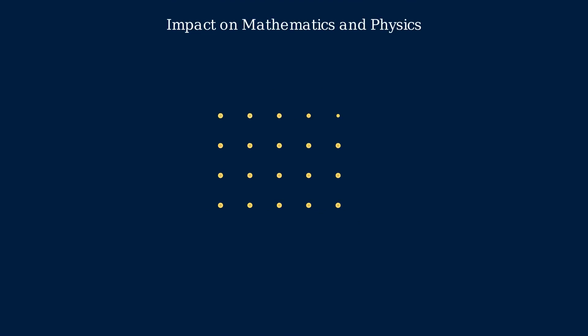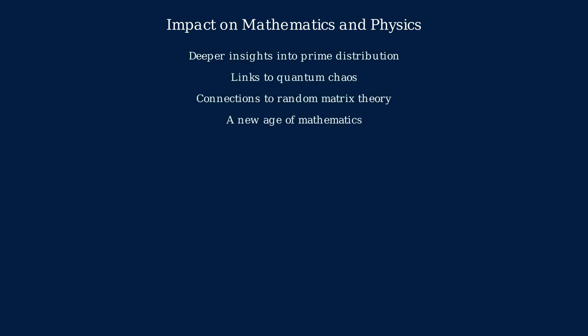If the Riemann hypothesis is proven, it would have profound implications for number theory, providing deeper insights into the distribution of prime numbers. It also impacts other areas of mathematics and physics, particularly quantum chaos and random matrix theory. The influence is so wide that it could usher in a new age of mathematics. Proving RH would connect primes, chaos, and randomness in unprecedented ways.